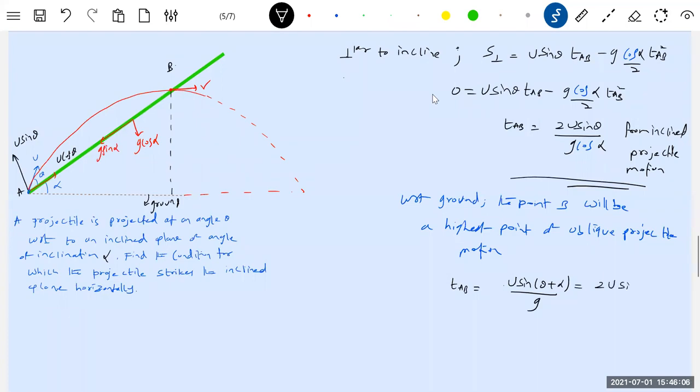Then I'll take both numerator and denominator. So there's equation one, there's equation two. Let me equate one and two. From equation one and two, two U sine theta by G sine alpha equals U sine theta plus alpha by G cos alpha.